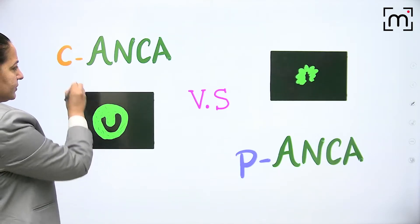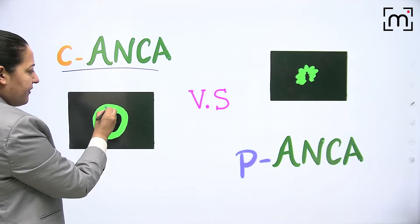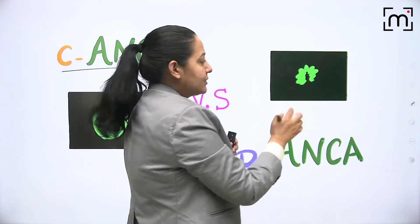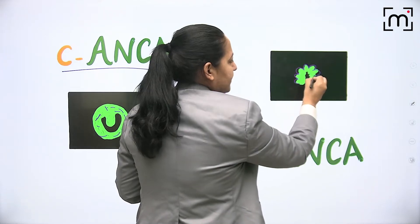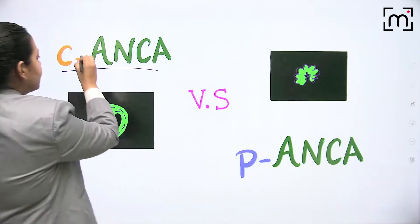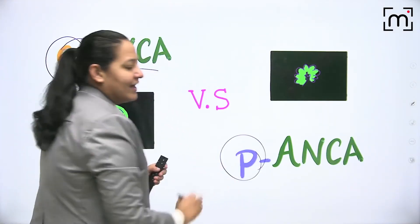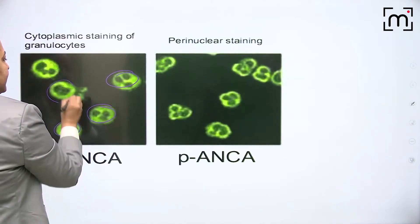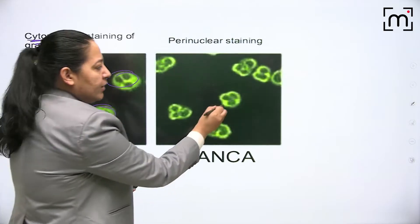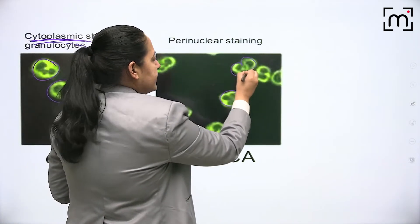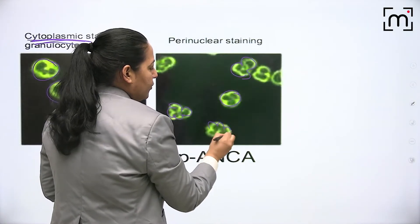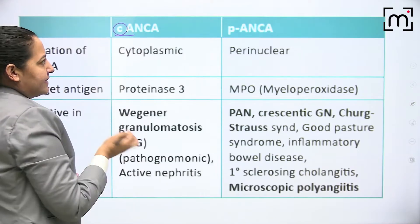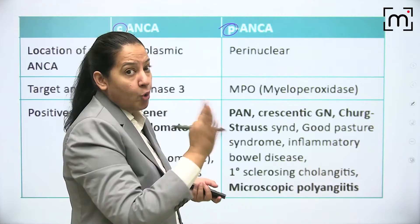You can appreciate the two types in the diagram. C-ANCA shows green color spread everywhere in the cytoplasm, randomly, not only around the nucleus. P-ANCA shows green color only around the nucleus - perinuclear - not everywhere in the cytoplasm. So c-ANCA is cytoplasmic anti-neutrophilic cytoplasmic antibody and p-ANCA is the perinuclear antibody.